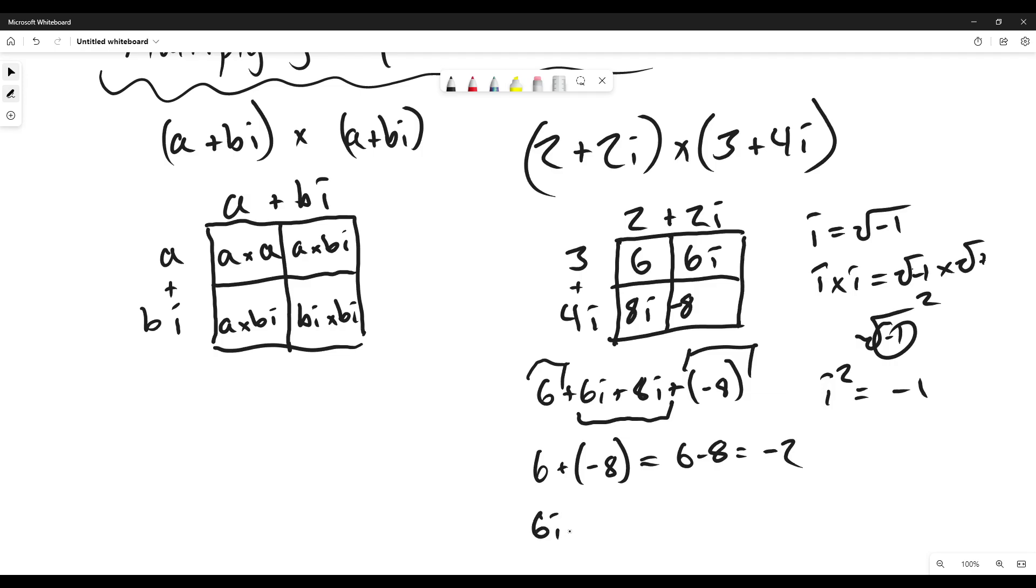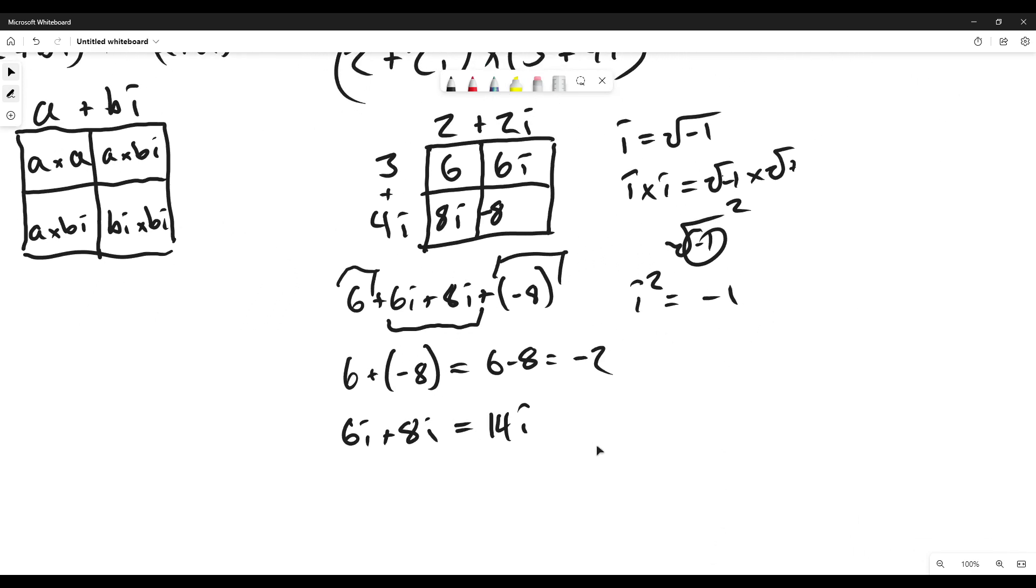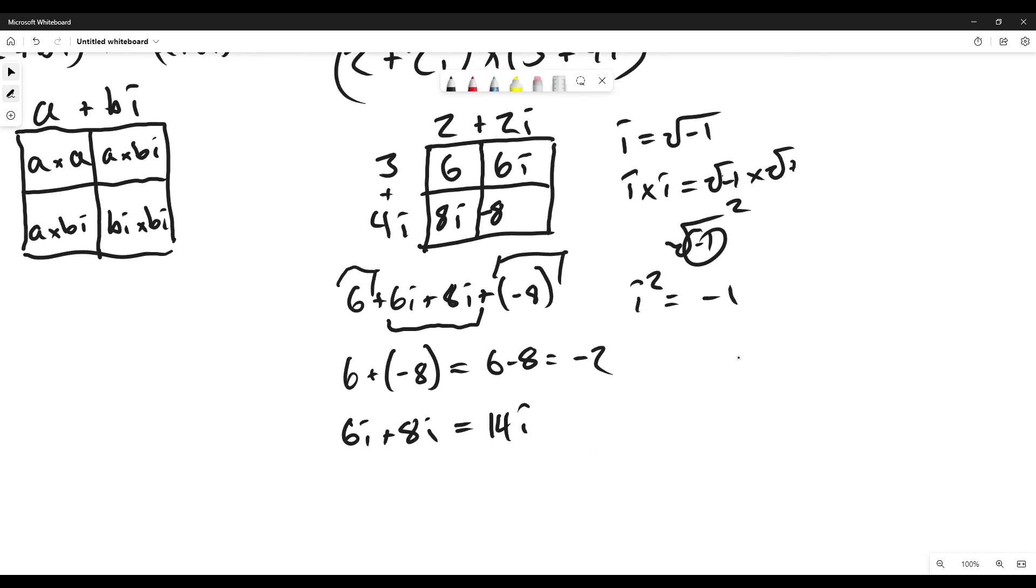And then we have 6i plus 8i. Since they're both positive we just have 14i. So our final answer would be negative 2 plus 14i.